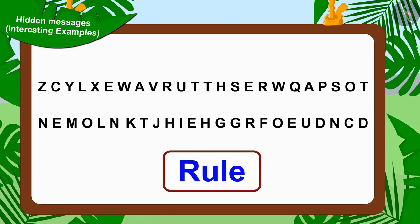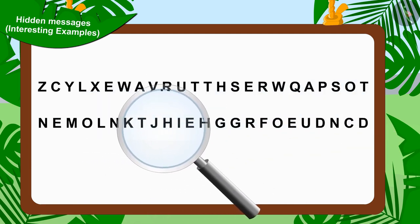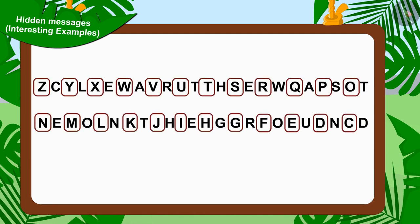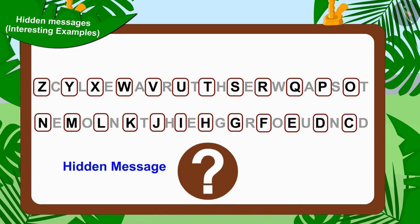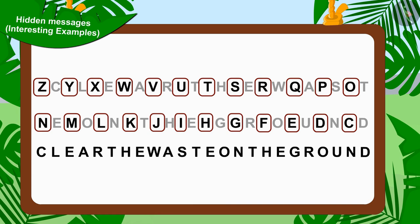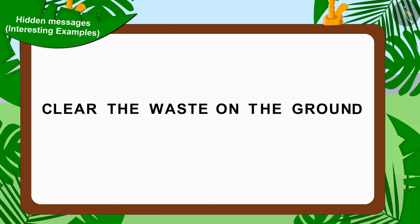Let us first find the rule in these alphabets. If we look closely, we will find that the alphabets here are written in reverse order. But do you understand any hidden message from these alphabets? No. Let us now write the remaining alphabets separately. Now do you understand Jeev's hidden message? Absolutely right — in this hidden message it is written: 'Clear the waste on the ground.'